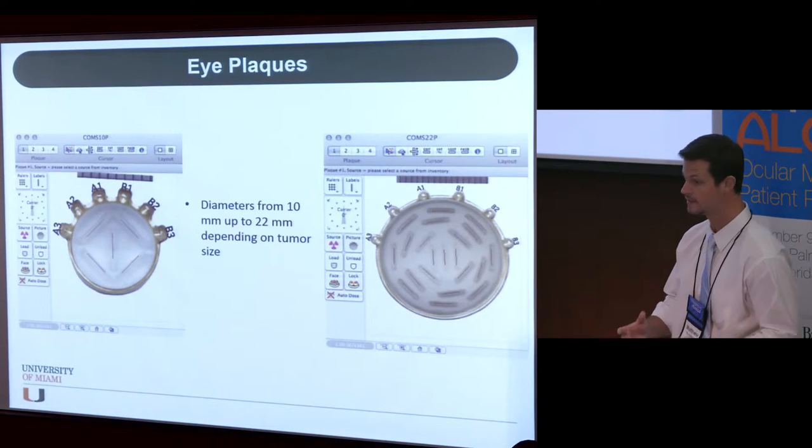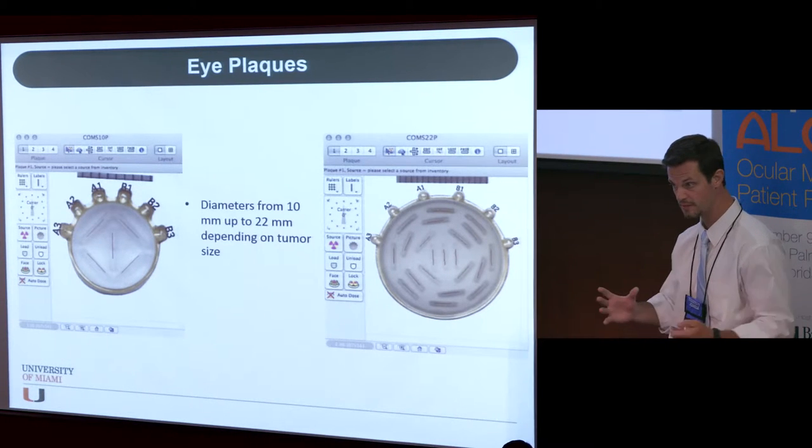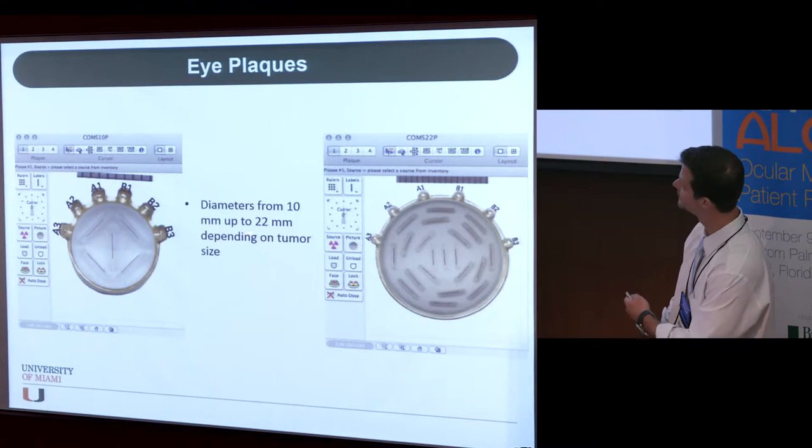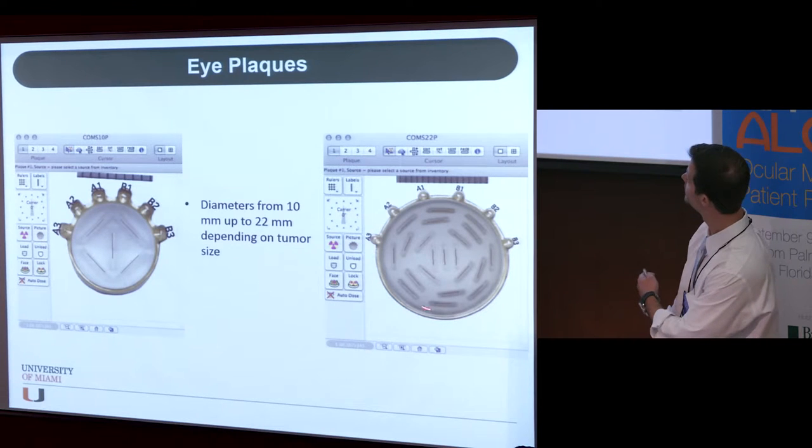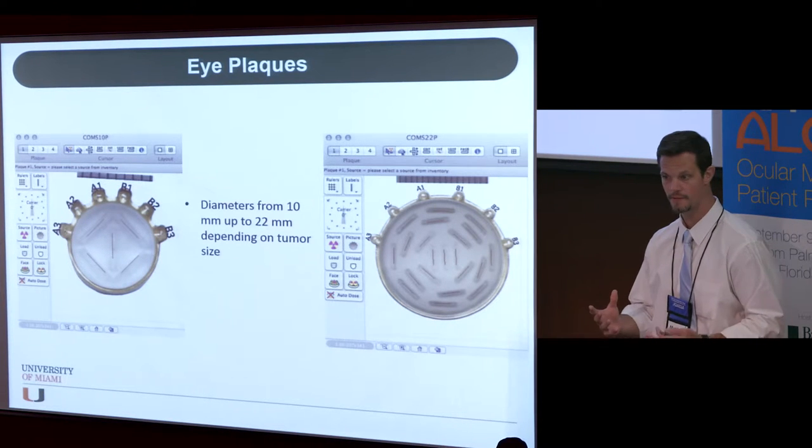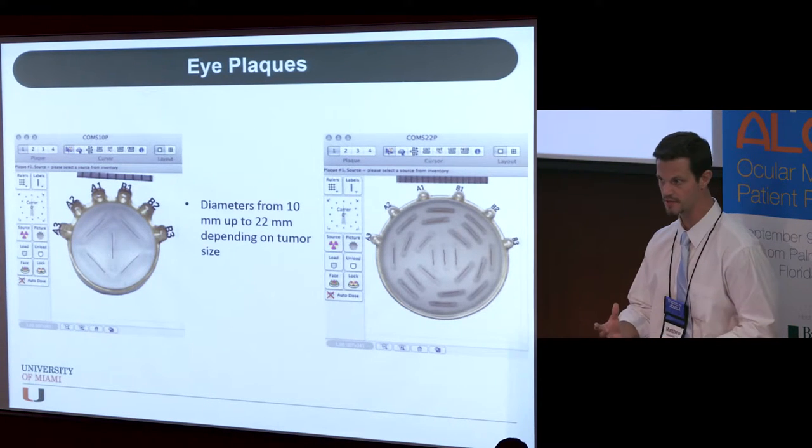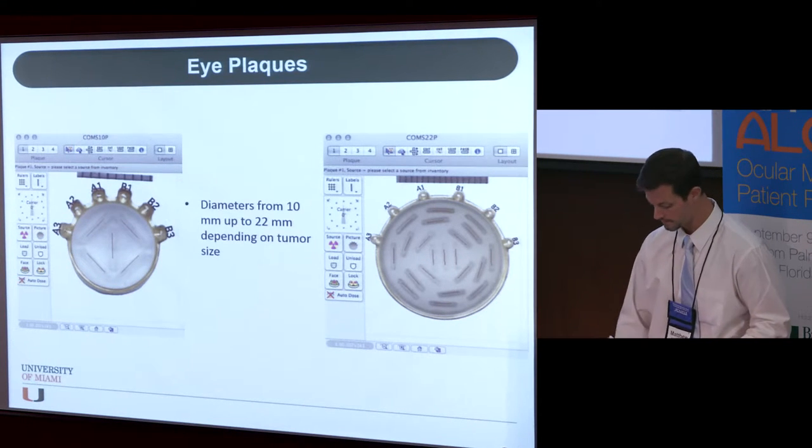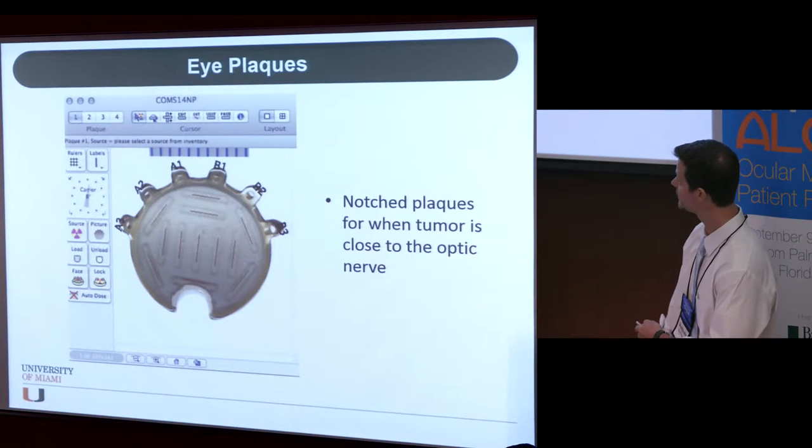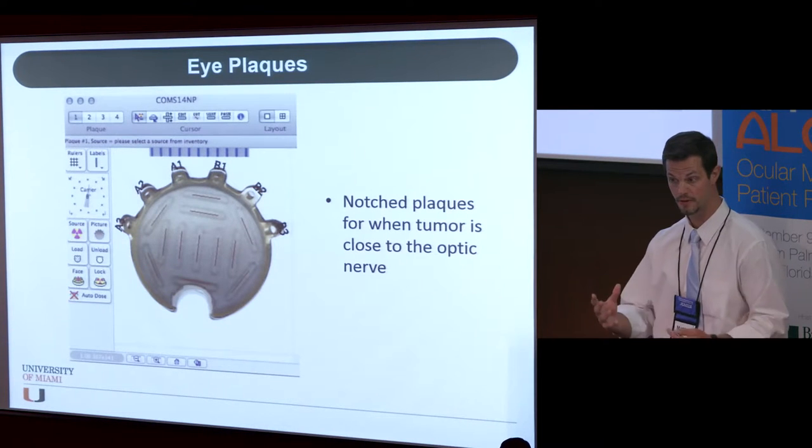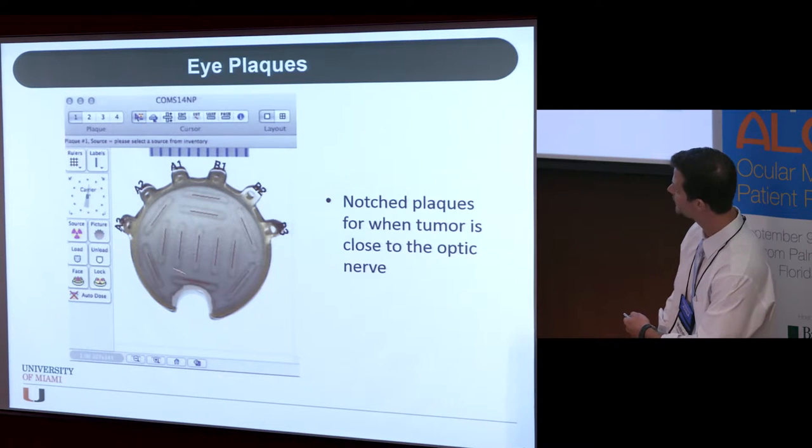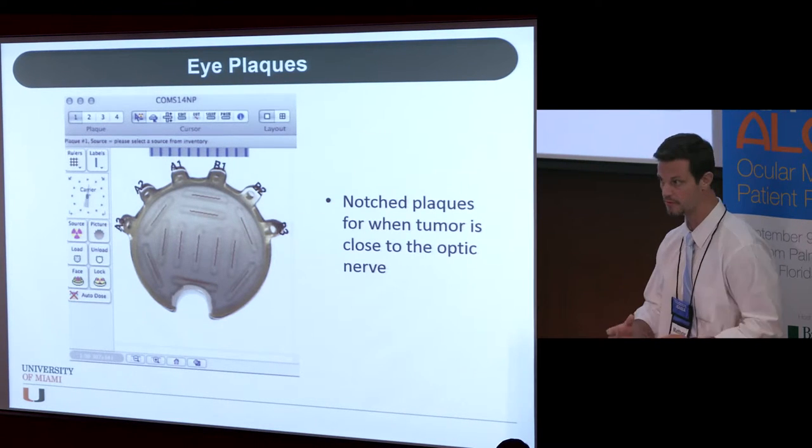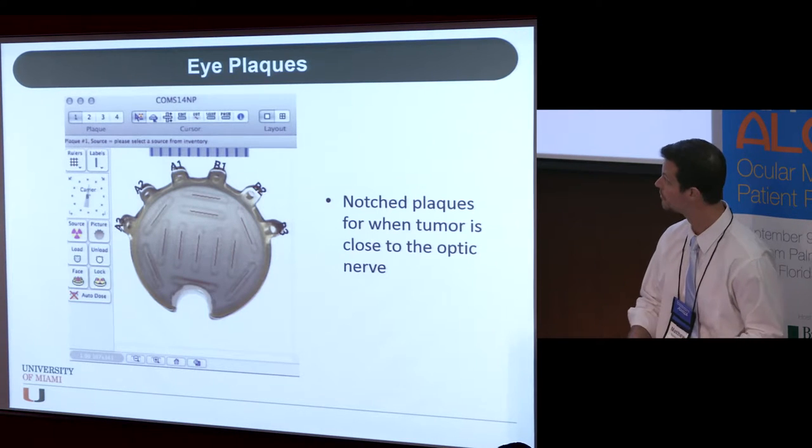So with COMS plaques, depending on the size of the tumor, we need to be able to treat different tumors. Again, we need to customize this for every patient. We have different diameter plaques. They range from 10 millimeters up to 22 millimeters. And these all have a prearranged seed location. So this helps us, again, with our dose calculation and figuring out where this dose is going. And we can also have notch plaques. So some of the tumors are very posterior. They're next to the nerve. And by having a notch in the plaque, this allows us to position the plaque a little bit closer to the tumor and, again, deliver the dose to the tumor that we need to.